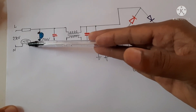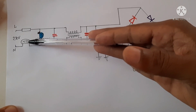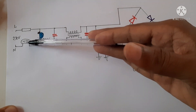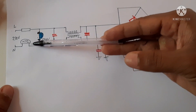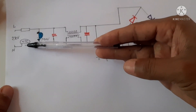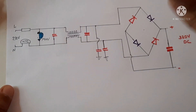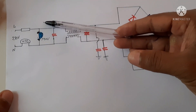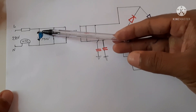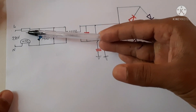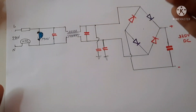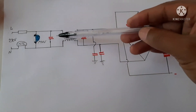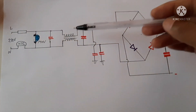NTC stands for Negative Temperature Coefficient. At initial time the temperature is low, so the current through it will be low. As the temperature increases it will allow more current to pass through it. This is an MOV — if any surge voltage or high voltage occurs, this will be short-circuited and the fuse will burn out. That is the function of the MOV.